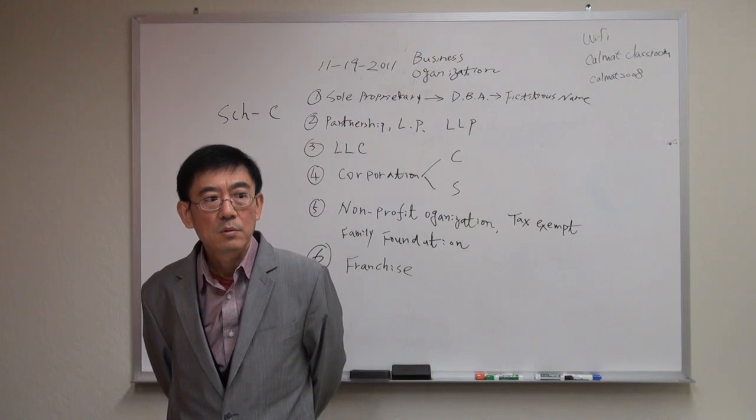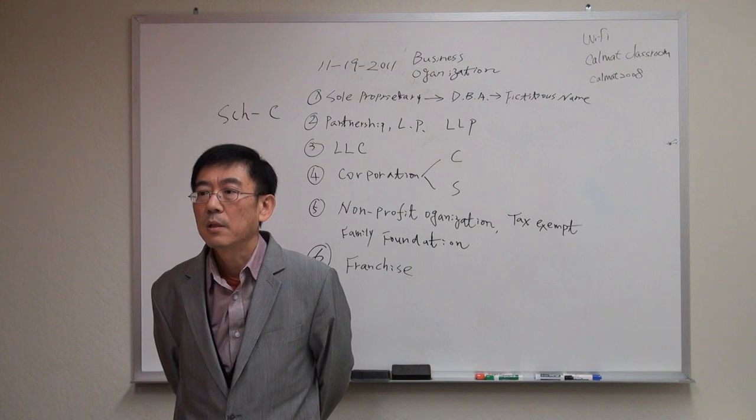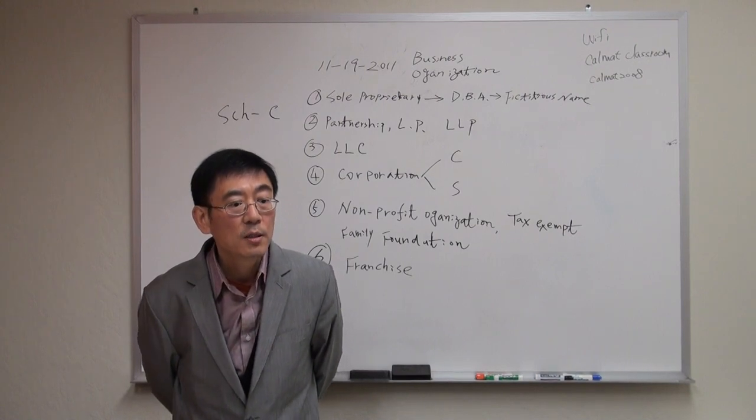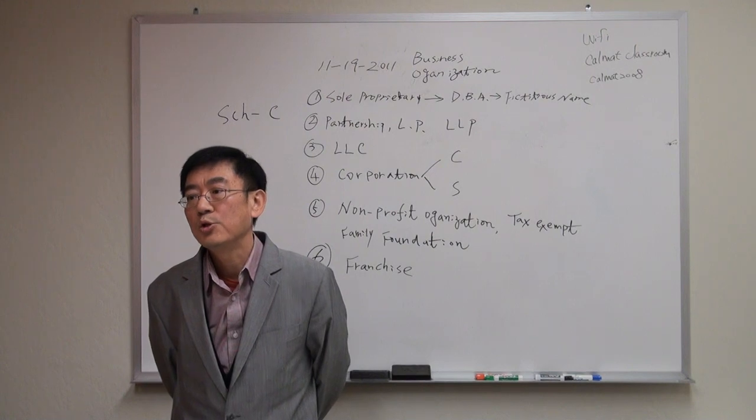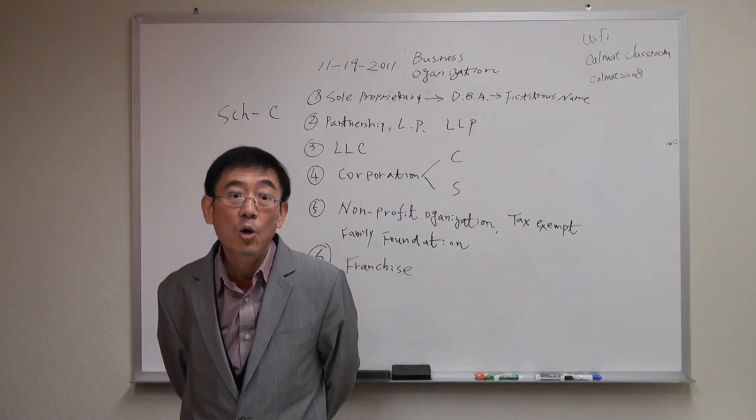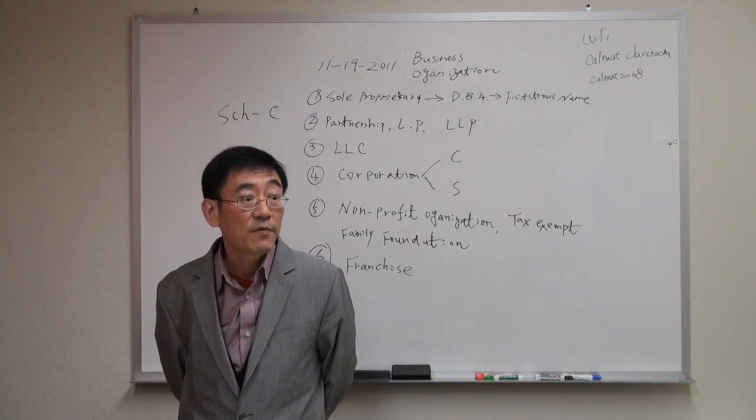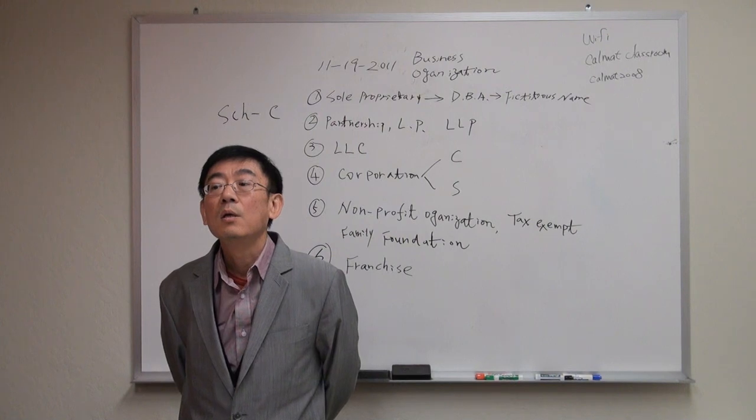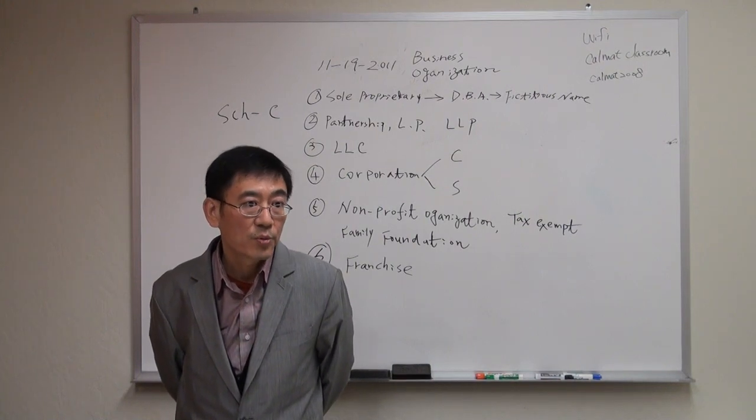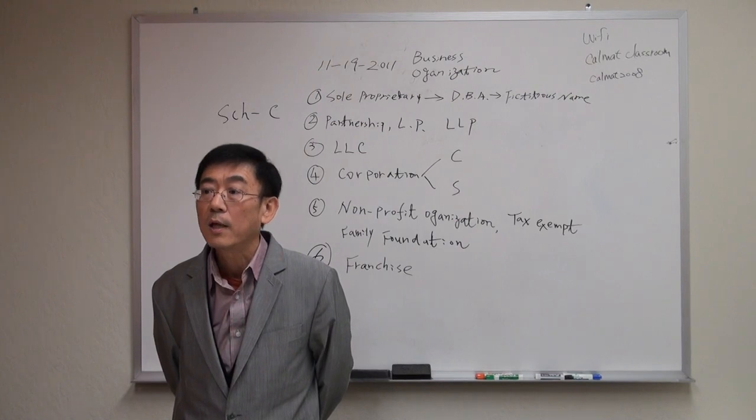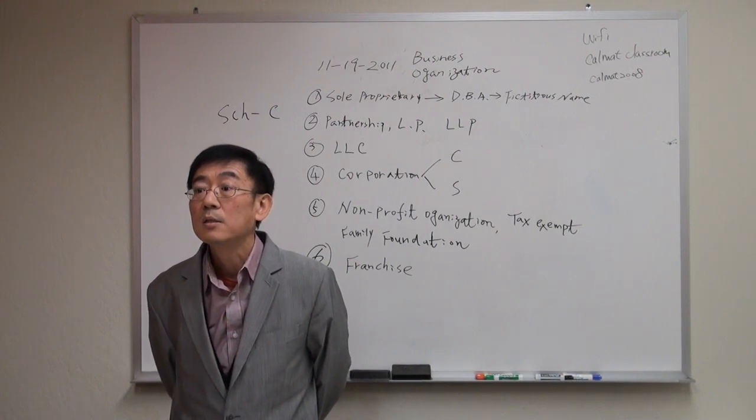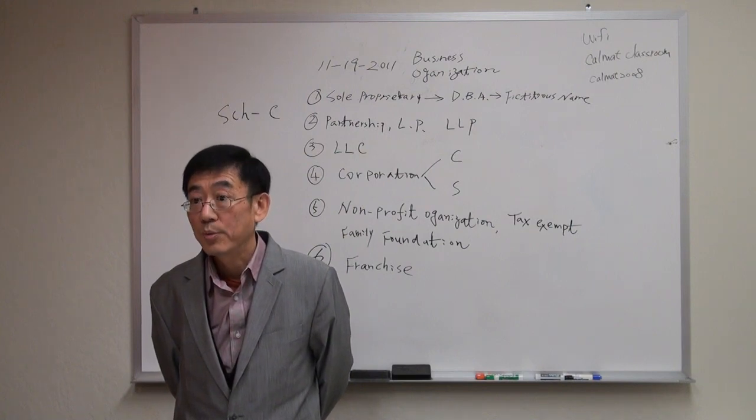There are two levels here. The first layer is state government. When you consider filing or registering as a corporation, number one, you go to the state to file registration. For state level, for state government, there is no C or S. For state level, there's a difference: a regular corporation, professional corporation, or non-profit corporation.